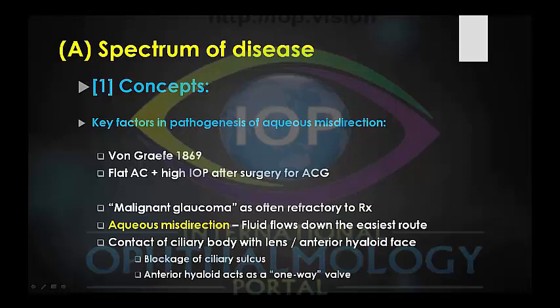Starting off with concepts, I want to think about the key factors in the pathogenesis of aqueous misdirection. Going back to 1869, Von Graefe was the first person to describe this condition. He described a flat anterior chamber and very high intraocular pressure after a patient underwent surgery for angle closure glaucoma. The term malignant glaucoma was later coined as this condition was often refractory to treatments.